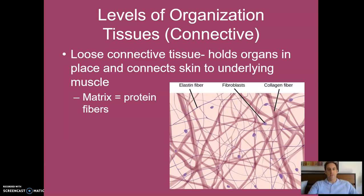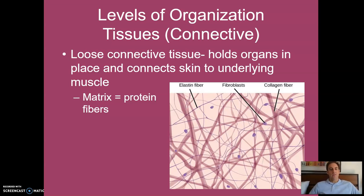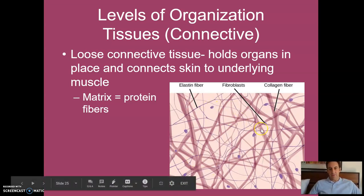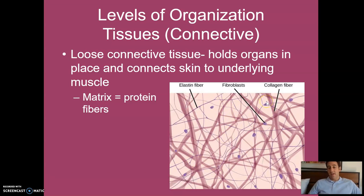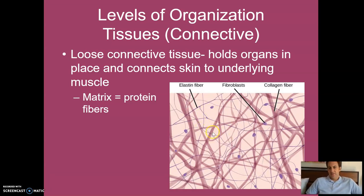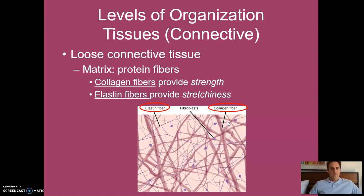The first type is loose connective tissue, responsible for holding your organs in place and connecting your skin to the underlying muscle. The matrix consists of little protein fibers. The cells are called fibroblasts, and they produce these fibers. There's different types: elastin, collagen, and others. It's called 'loose' because there's just a tangled, not very well-organized mesh of protein fibers.